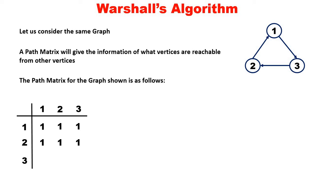Is there a path from 3 to 1? Yes: 3 to 2, 2 to 1. Is there a path from 3 to 2? Yes, there is a direct edge. Is there a path from 3 to 3? Yes: 3 to 2, 2 to 1, and 1 to 3. This is the path matrix. So now we know what is an adjacency matrix and what is a path matrix.